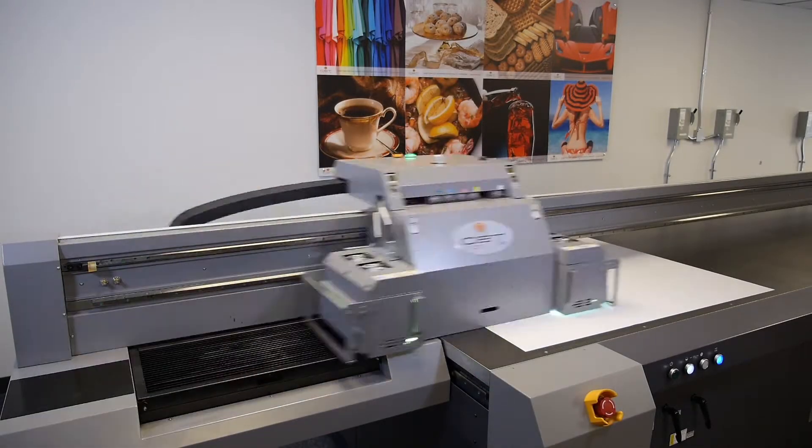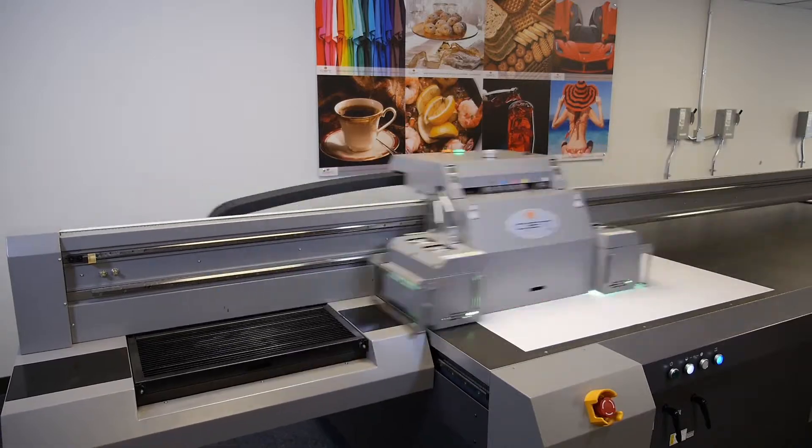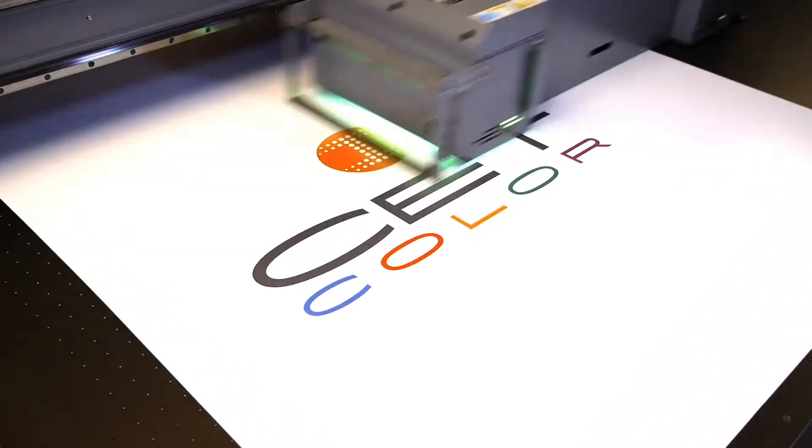And that's how to replace the secondary ink filters on a CET Color Large Format Digital UV Printer.